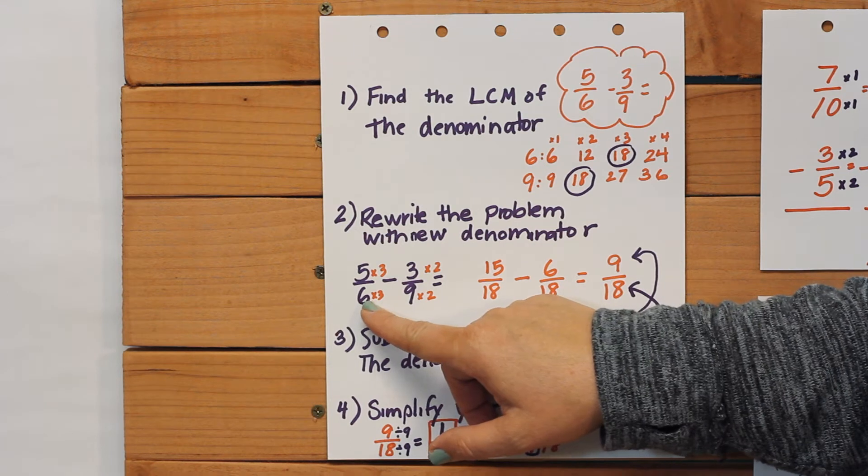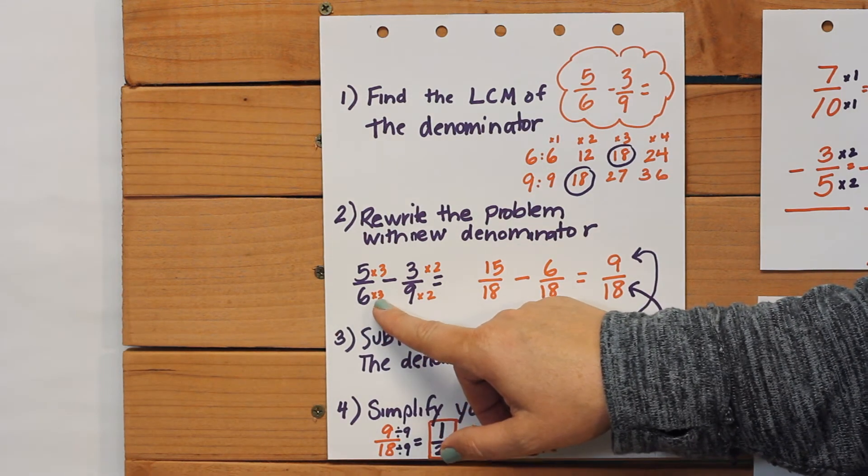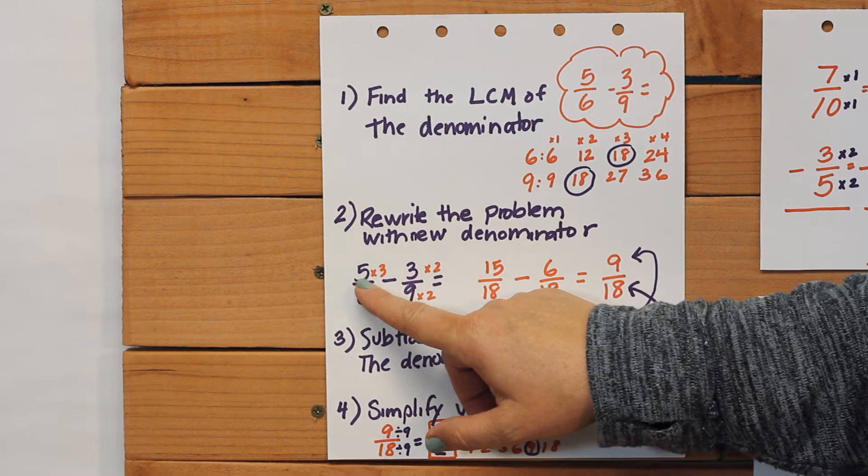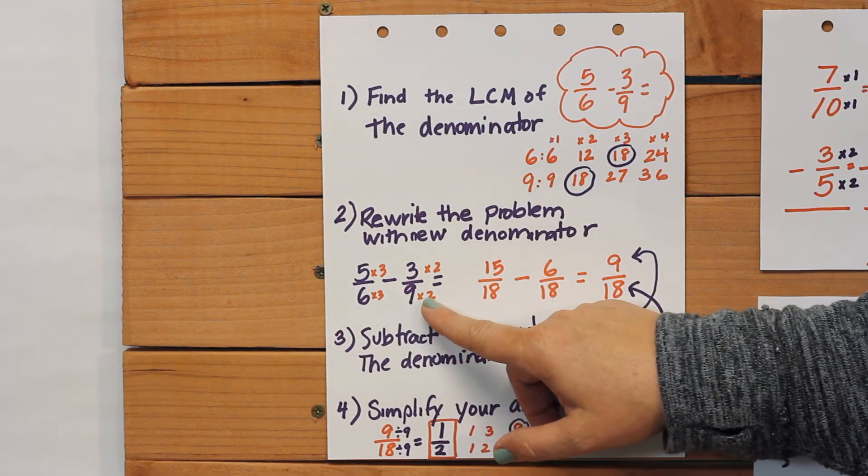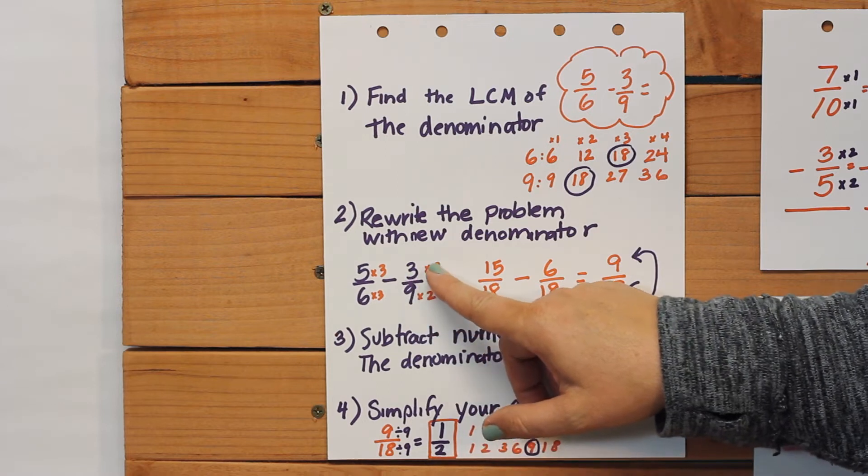Well, we know that six times three is eighteen, and five times three is fifteen. Nine times two is eighteen, and three times two is six.